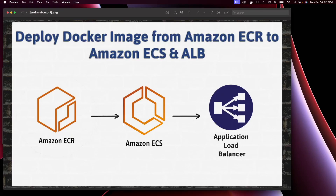Hello friends, welcome back to my channel. In today's video we are going to look at how to deploy a Docker image that is inside an Amazon ECR to Amazon ECS — the Elastic Container Service. I will also attach an Application Load Balancer to our service so that we can access the application on our web browser.